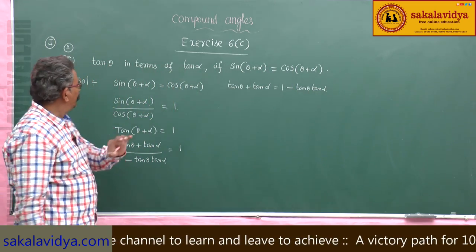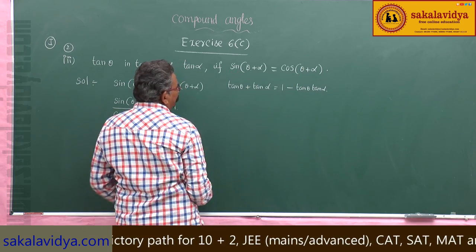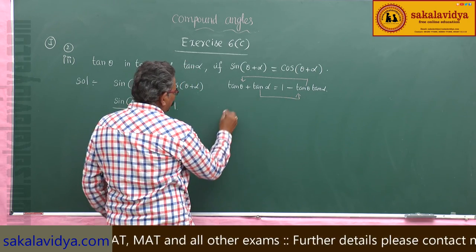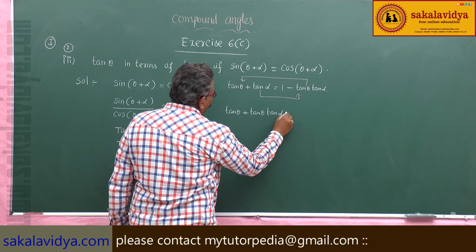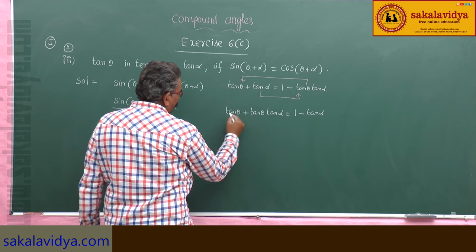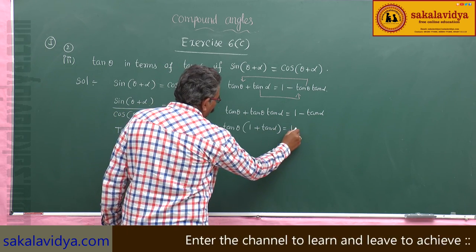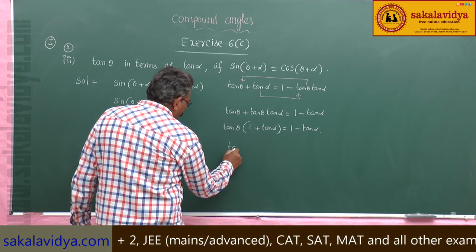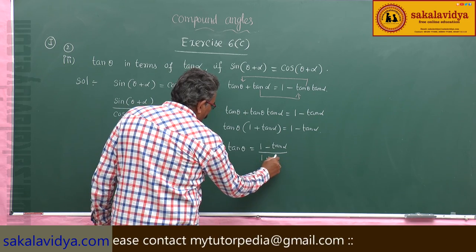Our aim is to express tan θ in terms of tan α. Bring the tan θ · tan α term to the left side and tan α to the right side. So we get tan θ plus tan θ · tan α equals 1 minus tan α. Taking tan θ common from the left side: tan θ(1 plus tan α) equals 1 minus tan α. Therefore, tan θ equals (1 minus tan α) by (1 plus tan α).